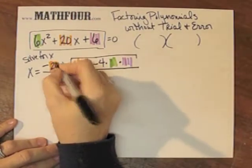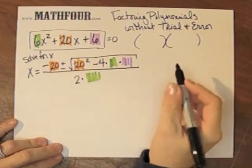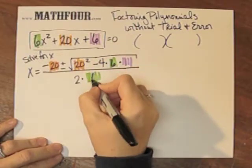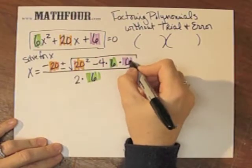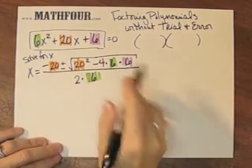So now I can put in my numbers. 20 is B, 6 is A, and 6 is C. So now it's time for arithmetic.